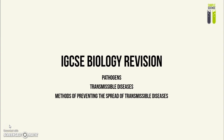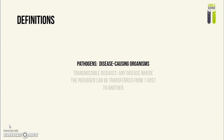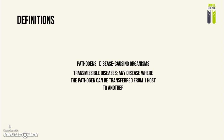Today I'm going to be covering a topic that is new to the IGCSE biology syllabus. It covers pathogens, transmissible diseases, and the ways you can prevent the spread of transmissible diseases. Pathogens are any organism that can cause you diseases — in other words, disease-causing organisms. Transmissible diseases are any disease where the pathogen can be transferred from one host to another.